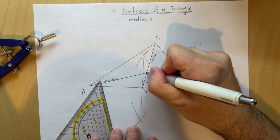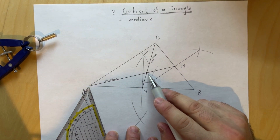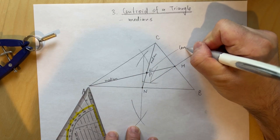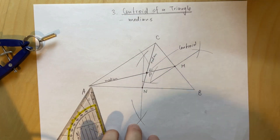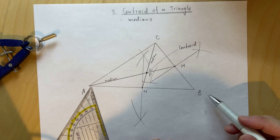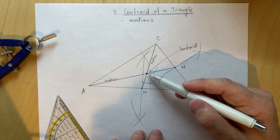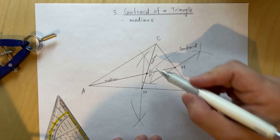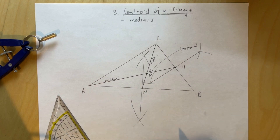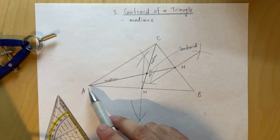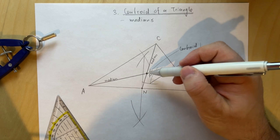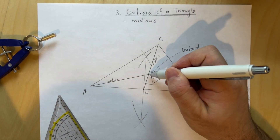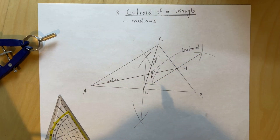The medians intersect at a specific point, which is the centroid. We denote that point as P. There is no circle associated with the centroid — no circumscribed or inscribed circle can be drawn from P. The centroid is the center of mass of the shape. If you have a homogeneous triangular material, you can balance the entire shape at that point on the tip of a pen.